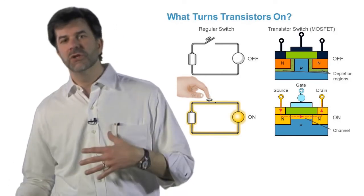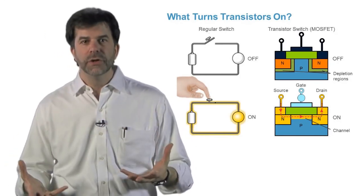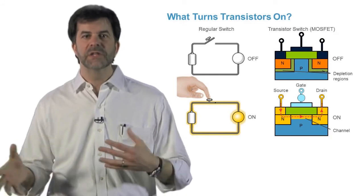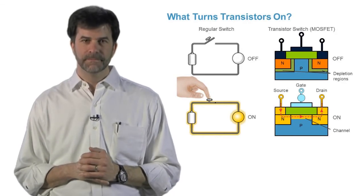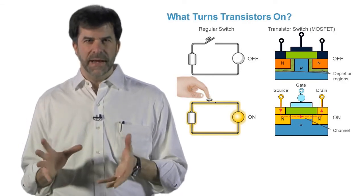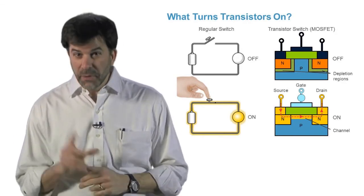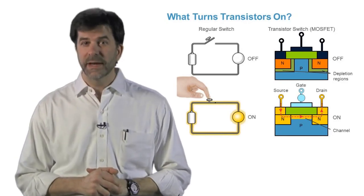All of these parameters, depletion region width, threshold voltage, breakdown voltages, and maximum current flows, can all be controlled by implant dose and energy. Now that we understand the fundamental implant structure, in part two, we can talk about implant applications.